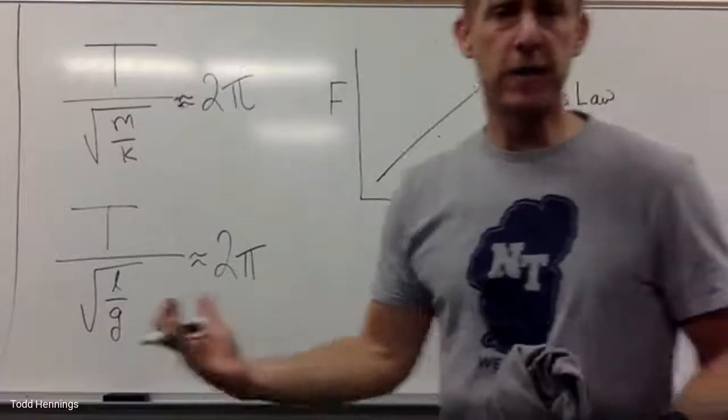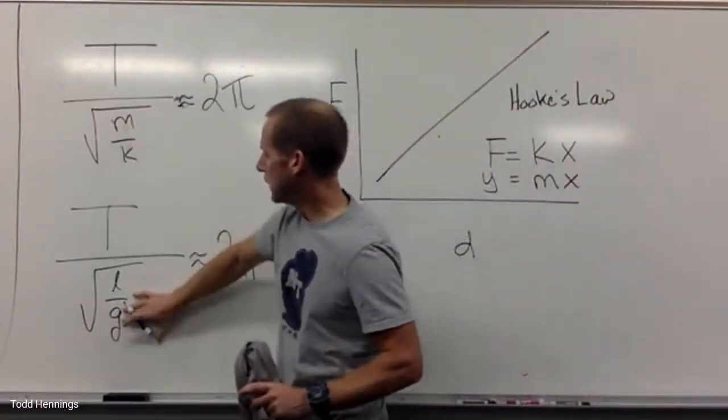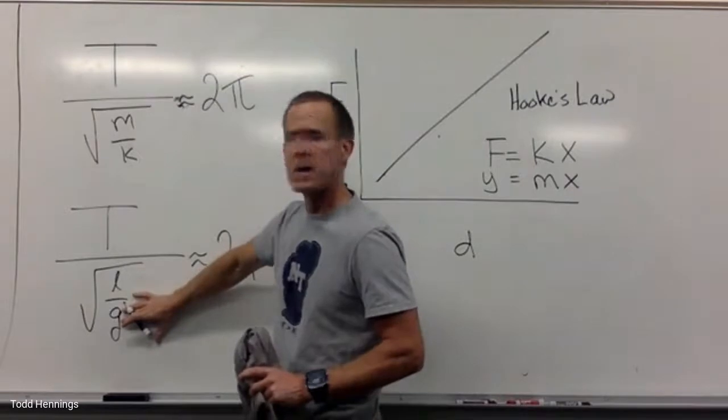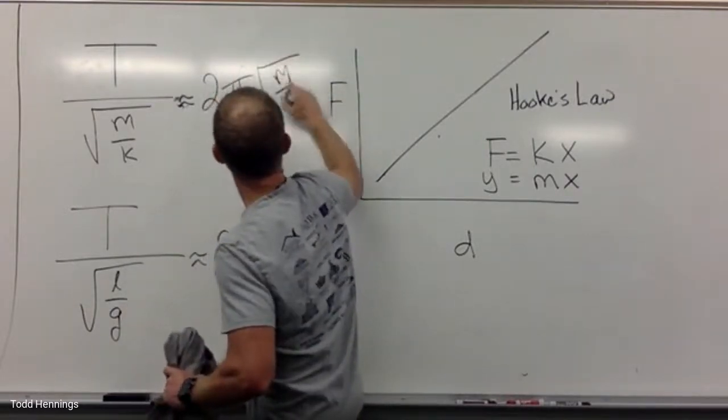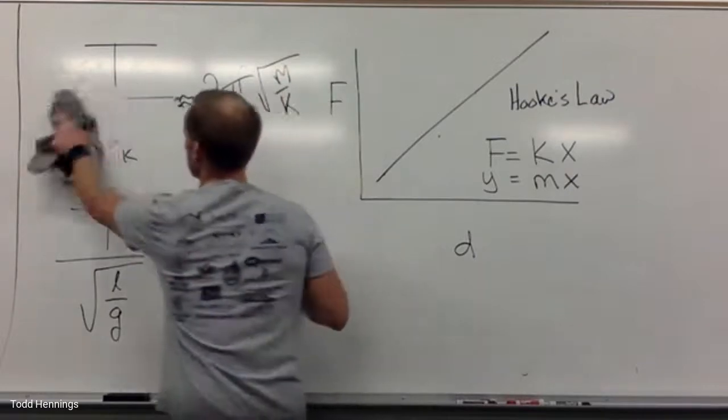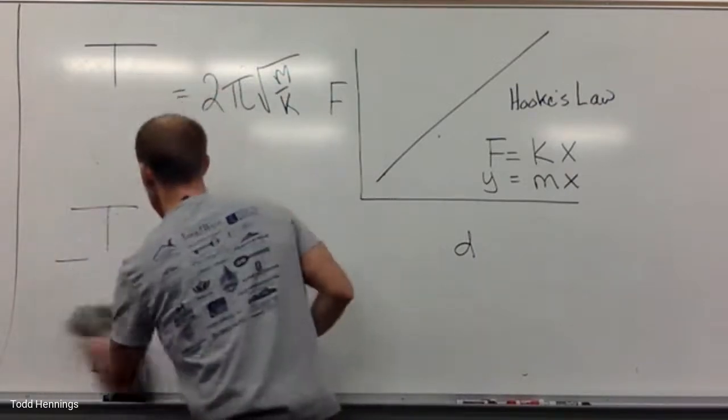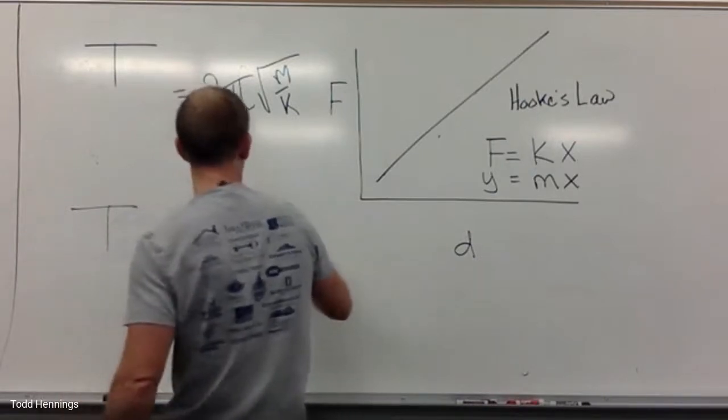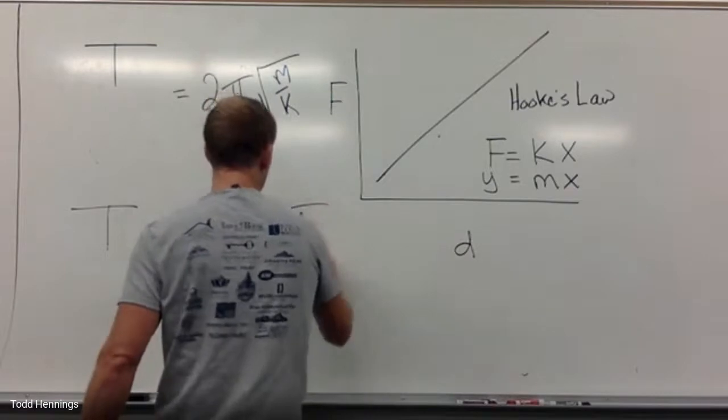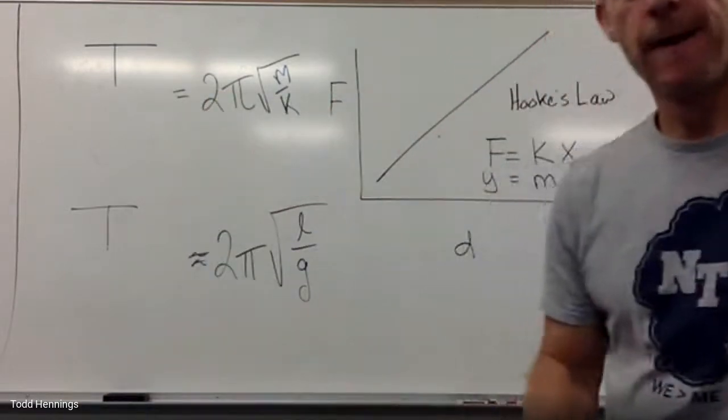So then if I solve it for t, the period, I would just multiply by the root underneath in the denominator, right? So t would equal, and I'll just do it here, 2 pi root m over k and t would equal 2 pi root l over g. So does that make sense? Yeah. All right. Now that's important. I'm going to go to the screen here and show you a few things.